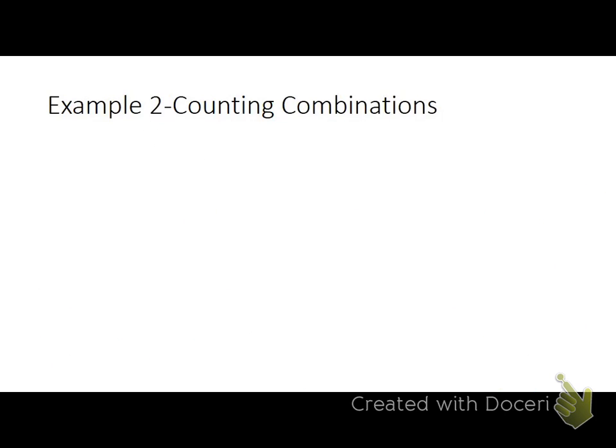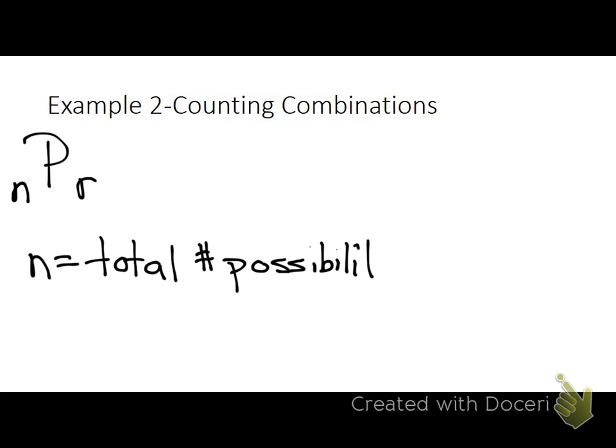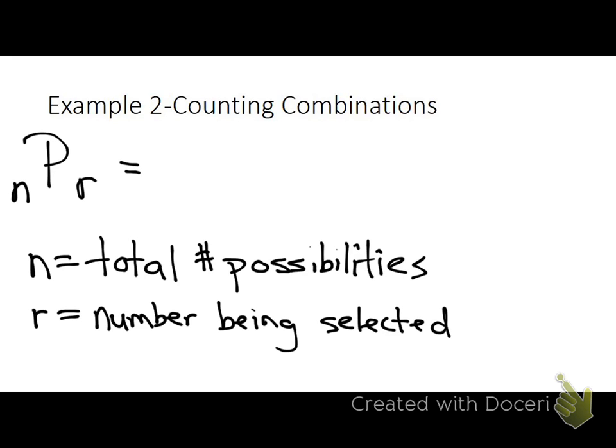Now in example 2, what if you're given an example where you have a total amount but there's only a select number of that total actually being picked? You need to use the formula NPR, where N stands for the total number of possibilities, and R stands for the number being selected or the portion of the total that's being tested. NPR, and P obviously stands for permutations.